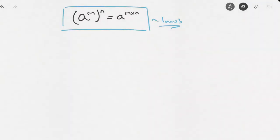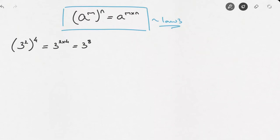Let's see how we can use this to simplify exponential expressions. For example, 3 to the power of 2 raised to the power of 4 — using the third law of exponents, this equals 3 to the power of 2 times 4, which equals 3 to the power of 8.